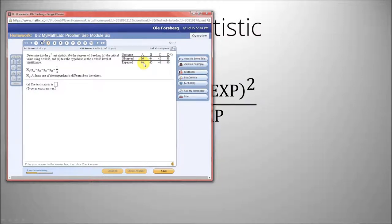36 minus 40 is negative 4 squared is 16, divided by 40, plus 44 minus 40 squared over 40, plus 42 minus 40 squared over 40, plus 38 minus 40 squared over 40. So, 16 plus 16 plus 4 plus 4, over 40, that comes out to be 16 and 16 is 32, plus 4 plus 4 is 40, divided by 40 is 1.